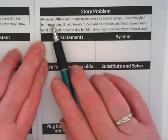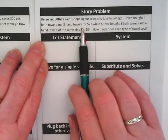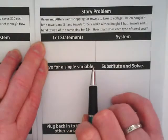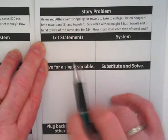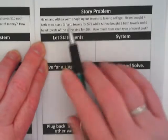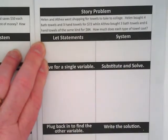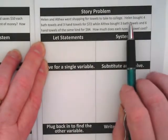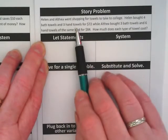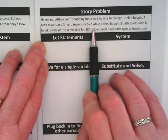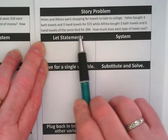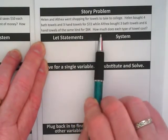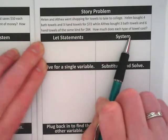In this problem, we have Helen and Althea went shopping for towels to take to college. How many of you have a brother, sister, or cousin who's gone to college? These people are buying way too many towels. Anyway, Helen bought four bath towels and three hand towels for $72, while Althea bought three bath towels and six hand towels of the same kind for $84. How much does each type of towel cost?